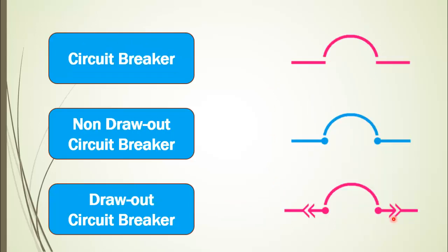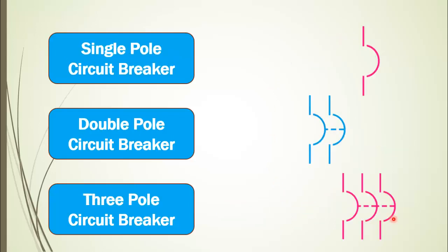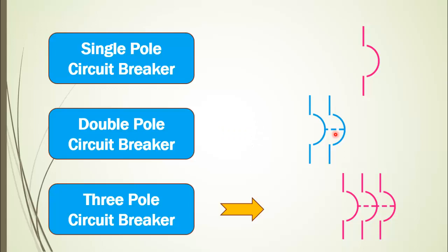Now comes the single pole circuit breaker, then the double pole circuit breaker. Both poles are linked together by the dotted line. Next is the three pole circuit breaker.